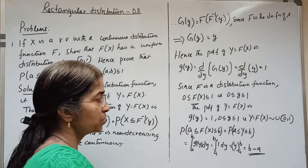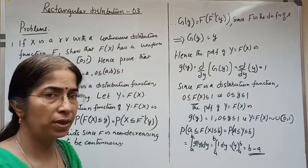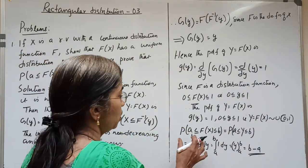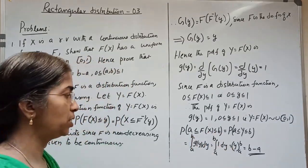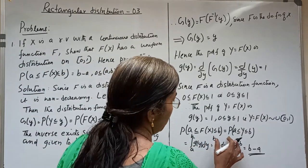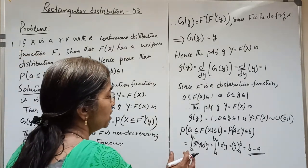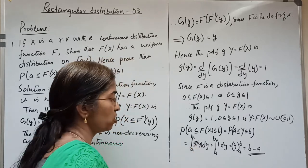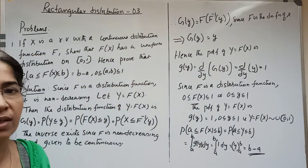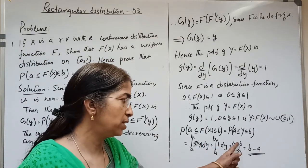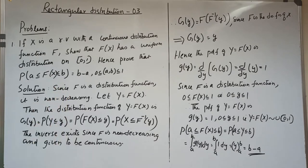That is, Y = F(X) follows Uniform(0,1). Now, in order to obtain P(a ≤ F(X) ≤ b), it equals P(a ≤ Y ≤ b) = integral from a to b of g(y) dy = integral from a to b of 1 dy = y evaluated from a to b = b - a. Hence we proved the result.